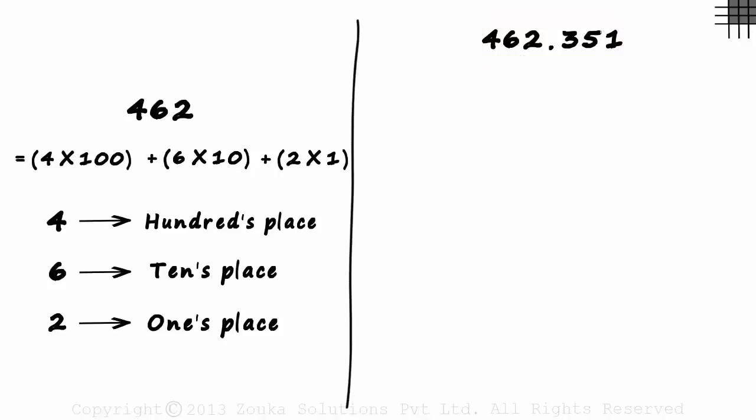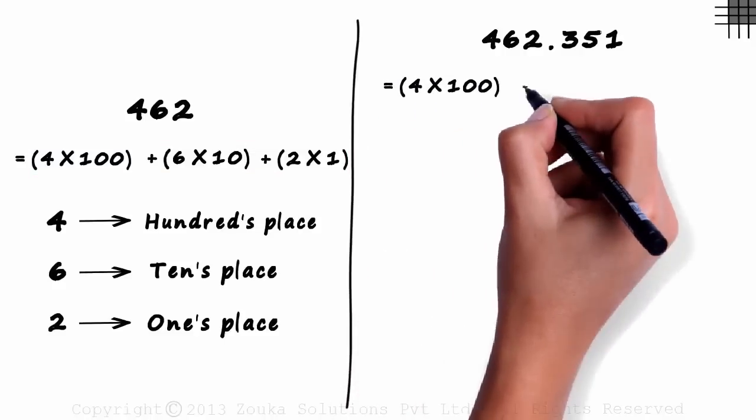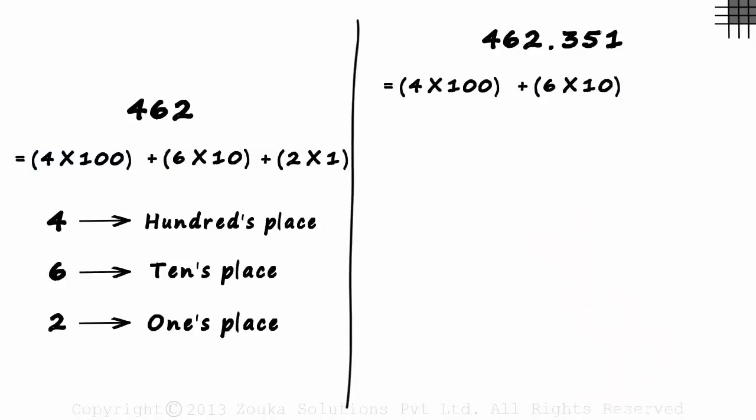It's simple. The digits that appear before the decimal point work just like this one. It will be 4 times 100 plus 6 times 10 plus 2 times 1.